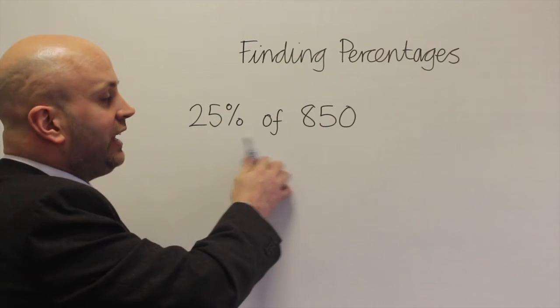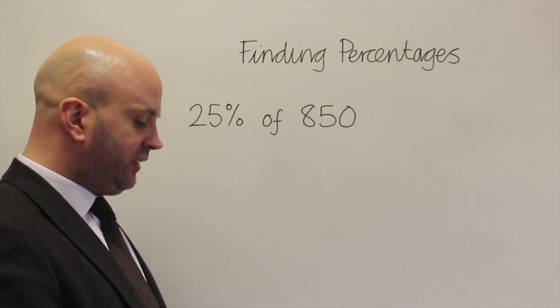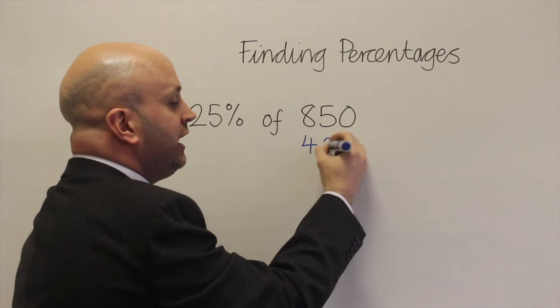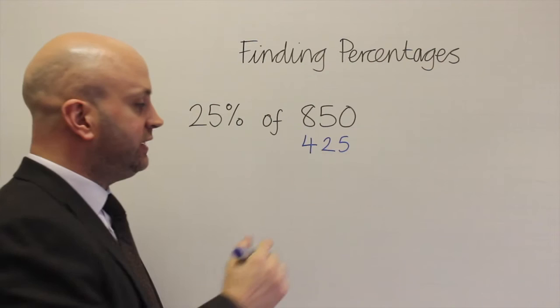So if I were to find a quarter, if I were to find 25% of 850, I am going to start by halving 850 which is 425 and then I am going to have a go at halving 425.